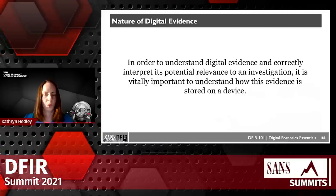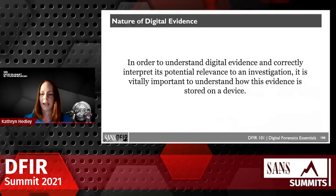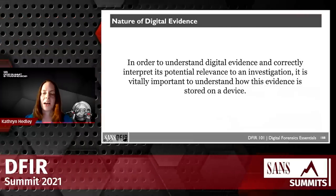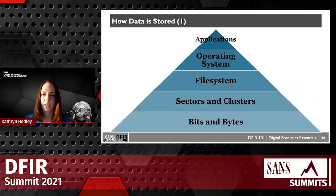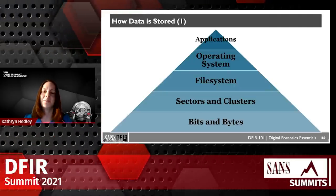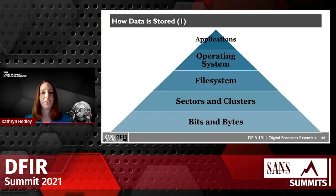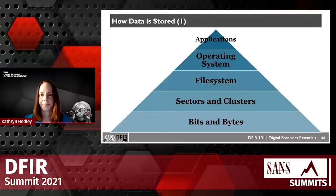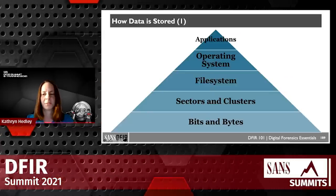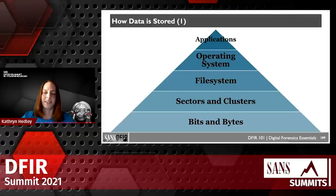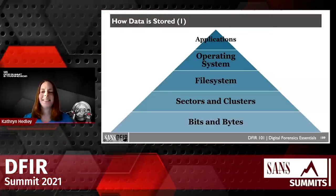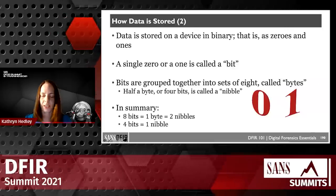To interpret digital data and show its relevance, we need to understand how it's stored on an electronic device. Data is stored in several layers. Most users interact at the application or operating system level — running apps like Zoom on Windows, macOS, Linux, Android, or iOS. Beneath that, at the bottom of the pyramid, data is stored in binary: bits and bytes — ones and zeros.